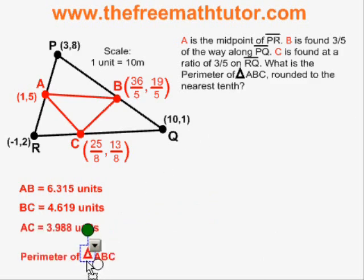It's time to find the perimeter of triangle ABC, which I find simply by adding together the three distances I found with my distance formulas. When I do that, I get 14.922, again rounded to the nearest thousandth.